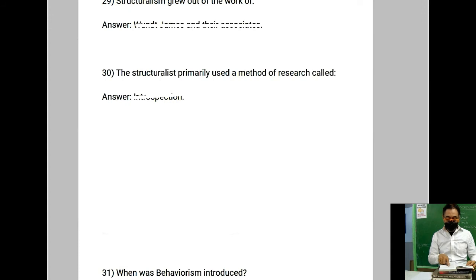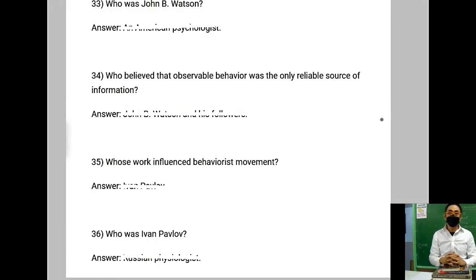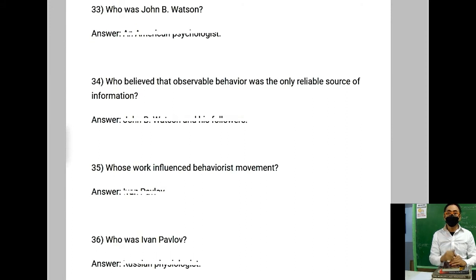Number 29: Structuralism grew out of the work of? The structuralists primarily used a method of research called? Number 31: When was behaviorism introduced? Number 33: Who was John B. Watson? Number 34: Who believed that observable behavior was the only reliable source of information? Number 35: Whose work influenced behaviorist movement? Number 36: Who was Ivan Pavlov?